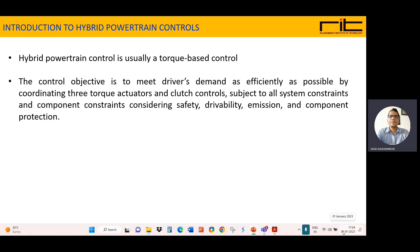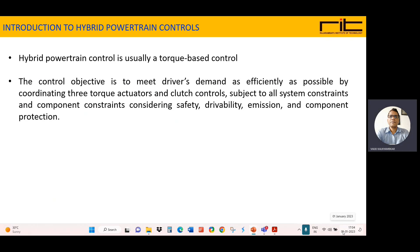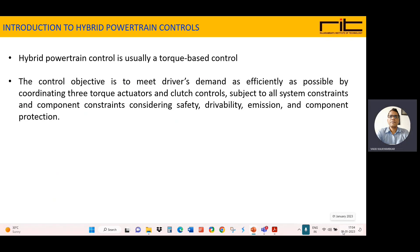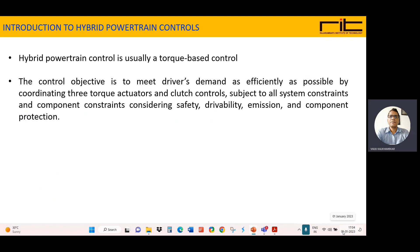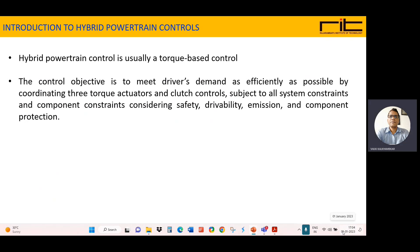The control objective is achieved by coordinating three core powertrain controls, subjected to all system constraints and component constraints, considering safety, drivability, emission, and component protection.